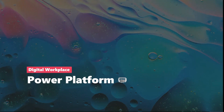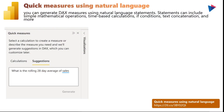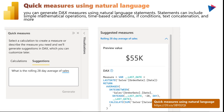For Microsoft Power Platform updates, first and foremost is quick measures using natural language. You can now take an existing quick measure — for example, you'll see a suggestion on the left-hand side: 'What is a rolling 28-day average of sales?' You can input what you want to calculate as a quick measure, and it will provide you the DAX query and share the format that you can then leverage in your own Power BI reports.